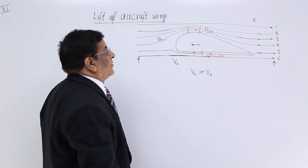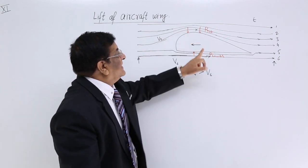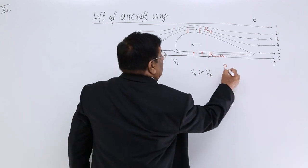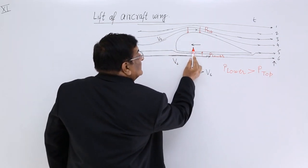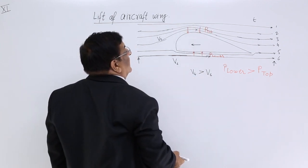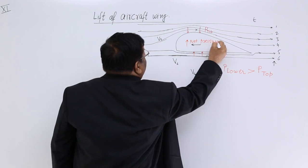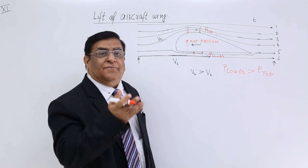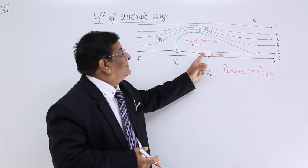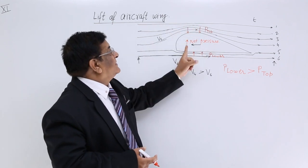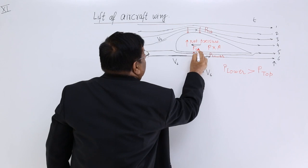Which pressure is more? Where velocity is less. Here this velocity is less and this velocity is more. So this pressure is less at the top and this pressure is more at the bottom. So P_lower is greater than P_top. This is the larger pressure at the bottom and lower pressure at the top. So the net pressure is upward. Pressure into area is upward — that is larger. So there is a net force acting upward. This net force acting up is the force of lift.